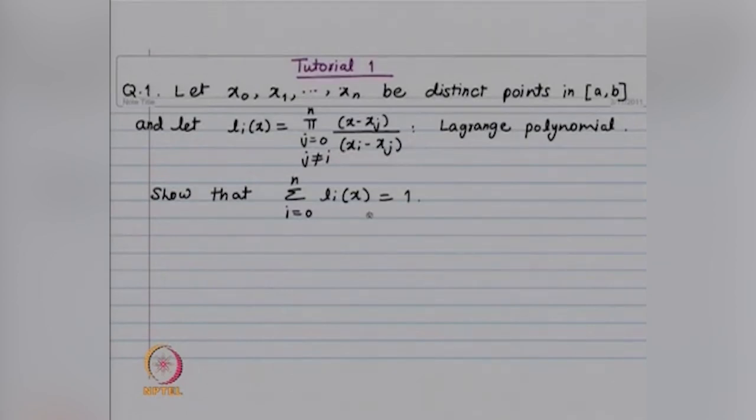Since the Lagrange polynomials are not defined recursively, induction may not be a good idea. In order to prove this, we are going to use the property that if the function f is a polynomial of degree m ≤ n, then when we fit a polynomial of degree n or higher, the interpolating polynomial is going to be the function itself. The interpolating polynomial p_n(x) = Σ f(x_i) l_i(x), i = 0 to n. We are interested in showing that Σ l_i(x) = 1, so the coefficients of l_i(x) should equal 1.